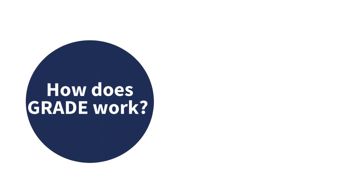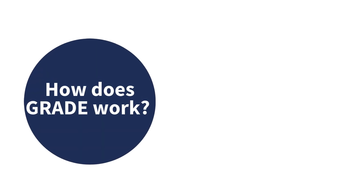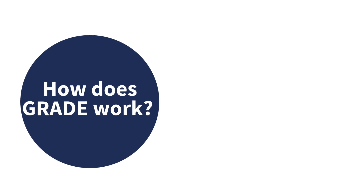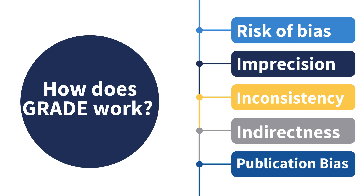The GRADE assessment begins with the authors assuming the result is true. Then they look at five different factors that can make them less sure about the truth of the result. The factors are risk of bias, imprecision, inconsistency, indirectness, and publication bias.